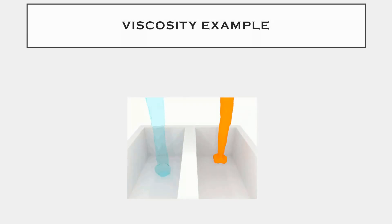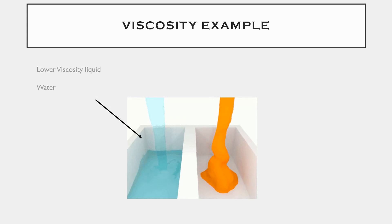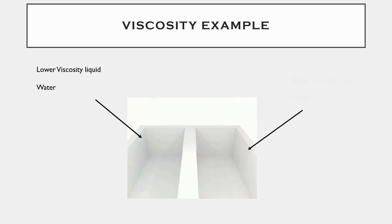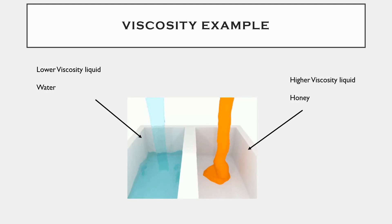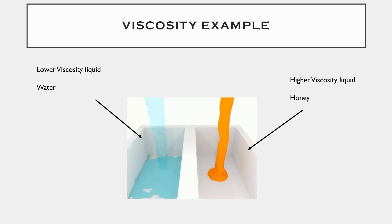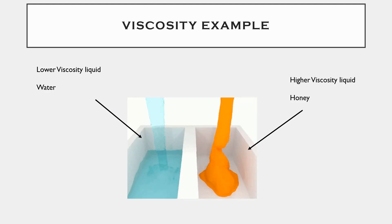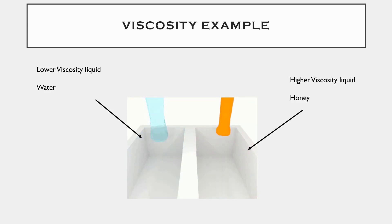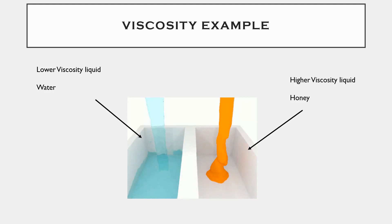Consider two tanks. The left side of the tank is filled with water, and the right side is filled with honey. Water is a low viscosity liquid and honey is a higher viscosity liquid. Water fills faster because its internal friction is low, so fluid resistance is low and fluid movement is faster. Honey has higher internal friction and fluid resistance, so fluid movement is slow and honey fills slowly.